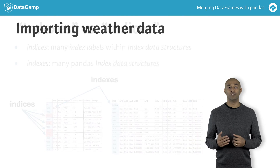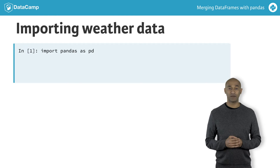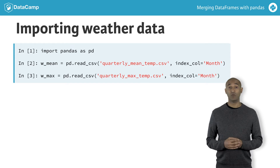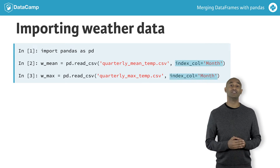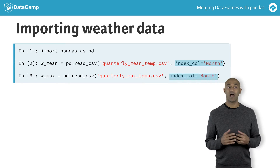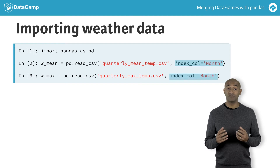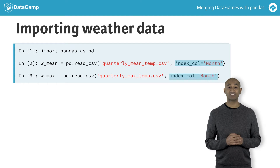To start, let's load two data frames of temperature data recorded from Pittsburgh in 2013. For both calls to read_csv, we use the index_col argument to specify which column becomes the data frame index — month in both cases. Remember, the index is a privileged column in pandas, providing convenient access to Series or data frame rows.